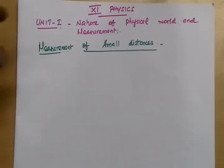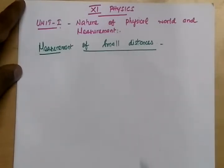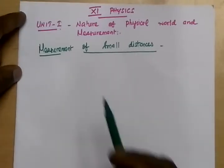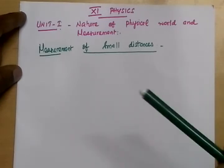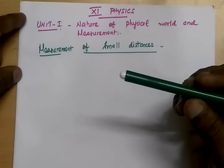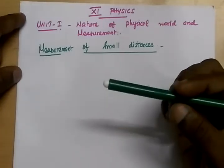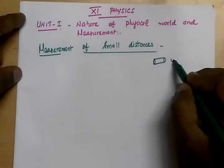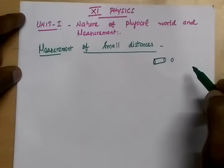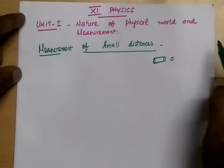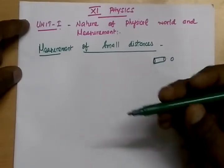Let's start measurement of distances. For example, this is a pen. You are going to measure diameter. This is a cylindrical shape. So you are going to measure diameter. I am going to measure the diameter. So how are you going to measure? You are going to measure using screw gauge.